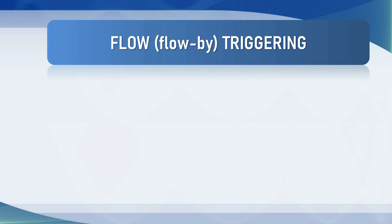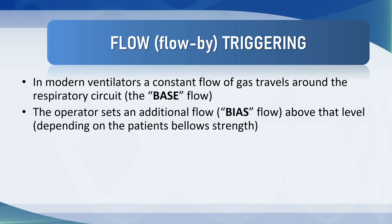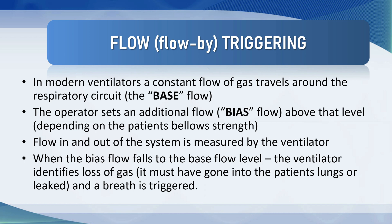Modern ventilators tend to be flow triggered rather than negative pressure triggered. Negative pressure triggering is still available, but most of the time we use flow-by or flow triggering — a clever way of resolving the problem. In these modern ventilators, a constant flow of gas travels around the respiratory circuit known as the base flow. The operator then sets an additional flow on top of that. The base flow plus the additional flow is known as the bias flow. When the bias flow falls down to the base flow level, the ventilator identifies loss of gas — it must have gone into the patient's lungs — and the breath is triggered.